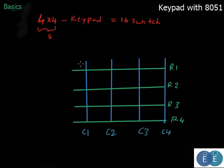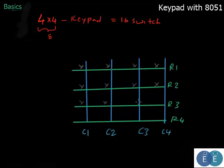At the intersection of each row and column there is a switch. Remember that if the switch is not pressed, the circuit is not complete — the row is not connected to the column. For instance, R1 is not connected to C2; only when the switch is pressed does R1 get connected to C2.